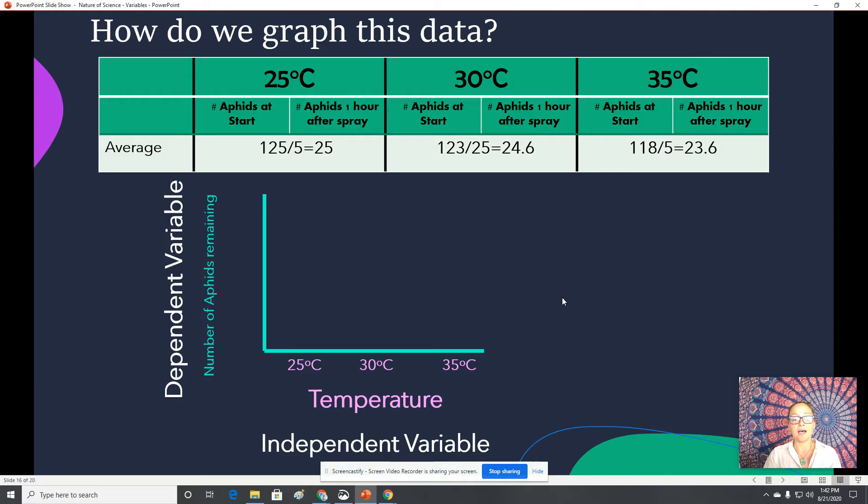So when we do this, we want to make sure when you set up your scale on your y-axis that your numbers, even on the x too, if it applies, you want to make sure that they're evenly distributed throughout. So here I chose to go by fives, but you could go by ones, twos, threes, whatever, but evenly 5, 10, 15, 20, 25, 30. So then I graph it.